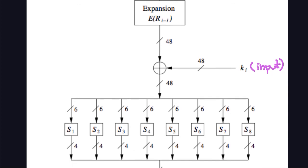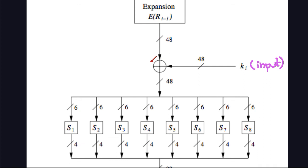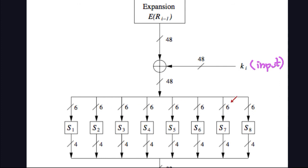In the next video, we will look at these S-boxes. We already know what the expansion permutation and the XOR are doing. What remains is to explain the S-boxes, which take the 48-bit block divided into eight 6-bit blocks and transform each 6-bit block using tables similar to the expansion permutation table. I will explain the details of what is going on inside those S-boxes in the next video.